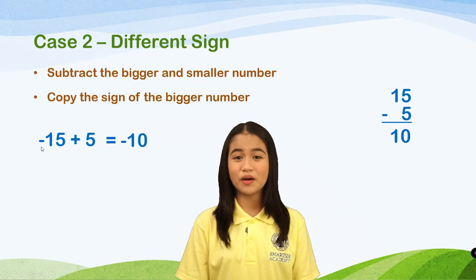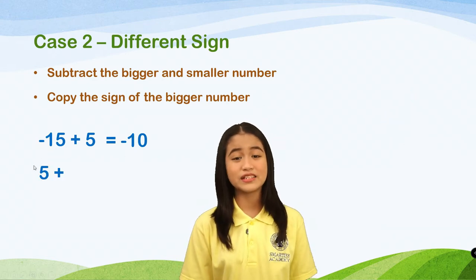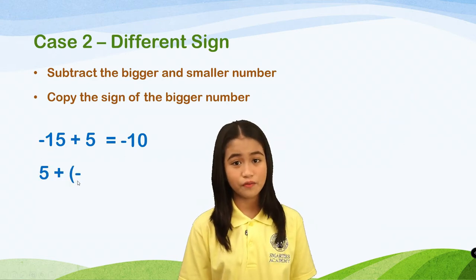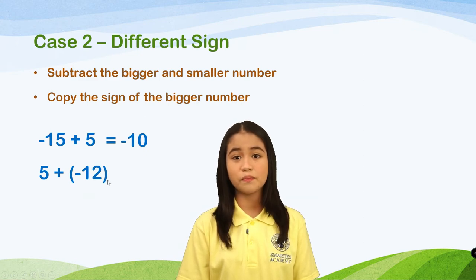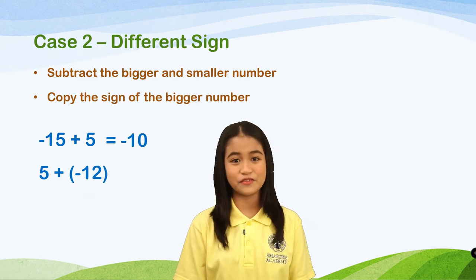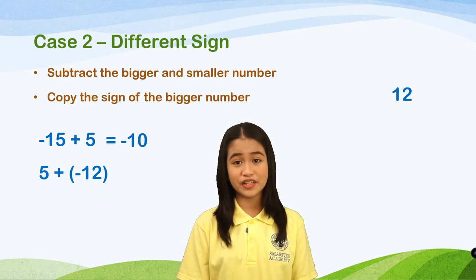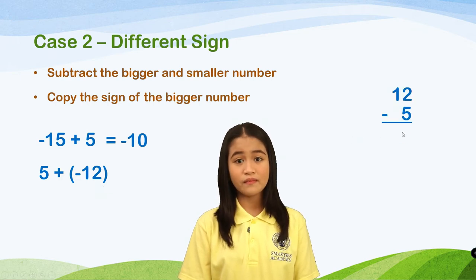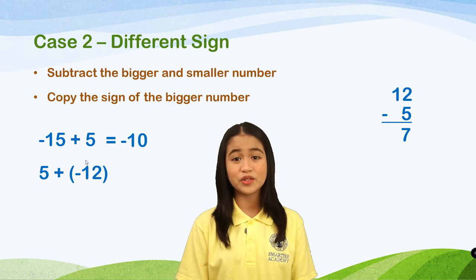Example number 2: positive 5 plus negative 12. They have different signs — one is positive and one is negative. Subtract 12 and 5; the answer is 7. Then copy the sign of the bigger number — 12 is negative, so write negative 7.